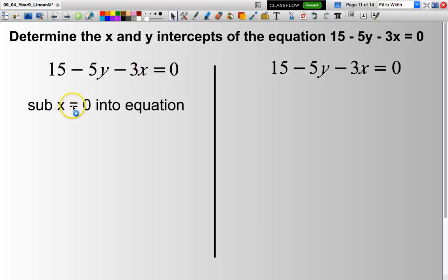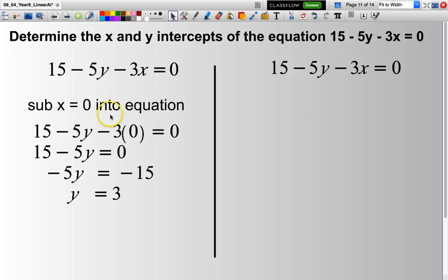Substitute x = 0 on the left. So I will take the 0, put it in where the x is. That will basically become 0. So I end up with 15 - 5y = 0. Trying to solve for y. I'll subtract 15 from both sides. Will give me -5y = -15.